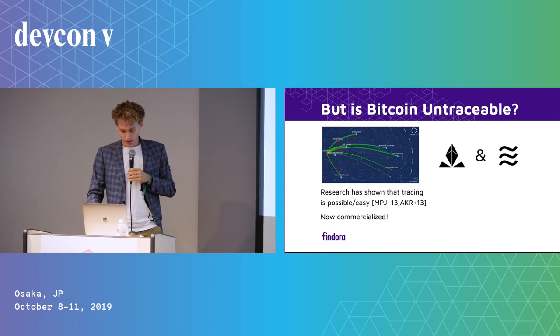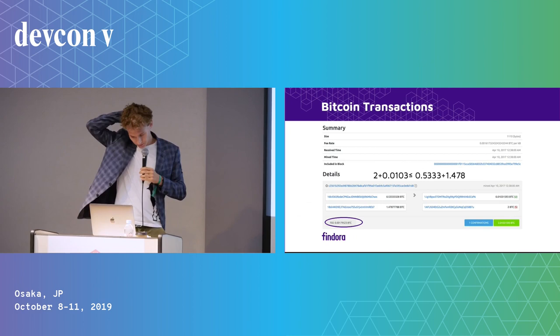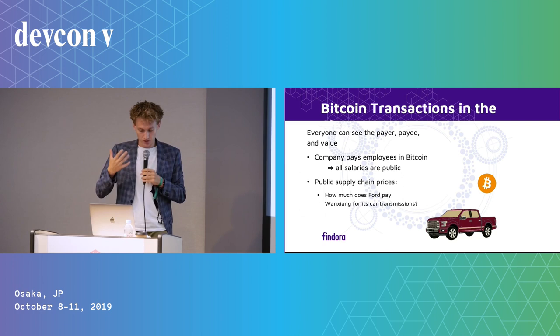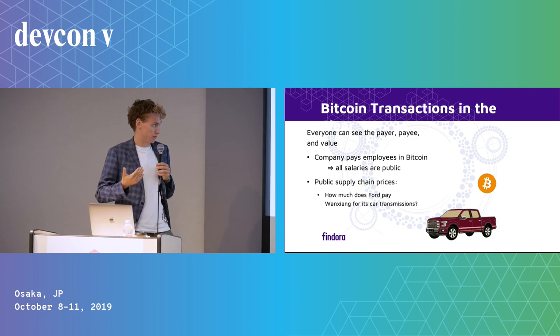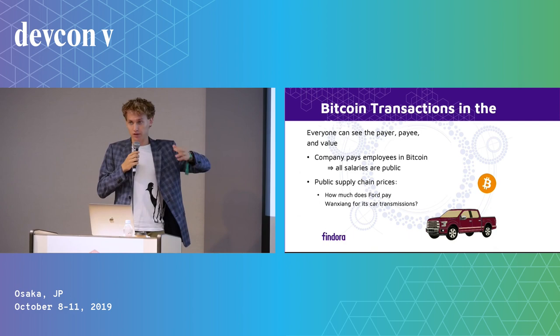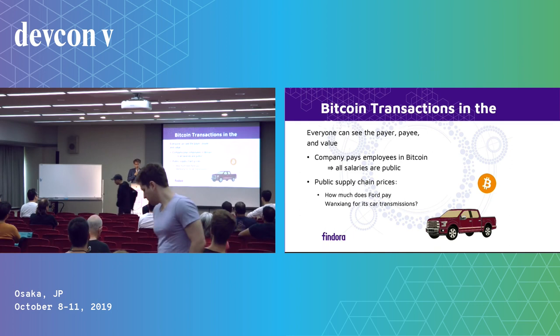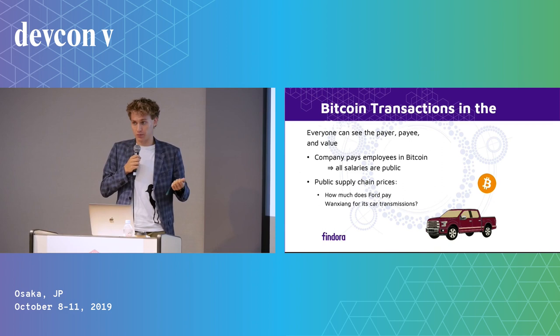The problem is that this is actually really bad for privacy, because everything is public. If I get my salary in Bitcoin or Ethereum, then my salary will be public on the blockchain and everybody can see it. Also, if I'm a company and I buy some supplies, then all of my competitors will exactly see how much I'm paying for these supplies. And that's an important business secret.